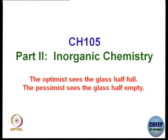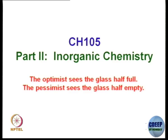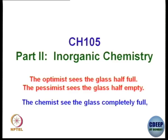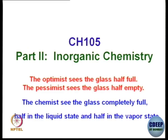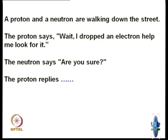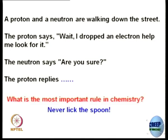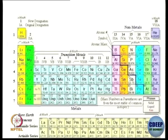An optimist sees the glass half full, the pessimist sees the glass half empty. But the chemist — hopefully better than all of them — sees the glass completely full: half in liquid state and half in vapor. With this note, I will briefly go into the periodic table.